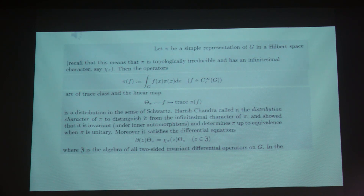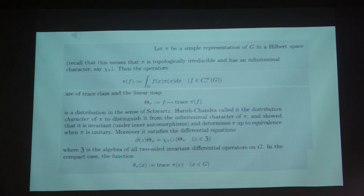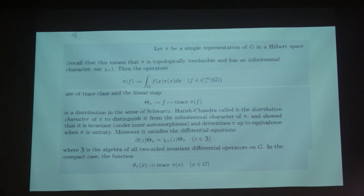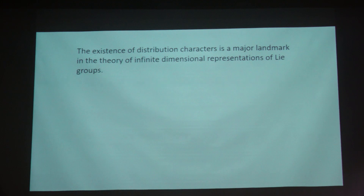This linear map sending f to trace of π(f) is a distribution in the sense of Schwartz. Harish Chandra called it the distribution character of π, to distinguish it from the infinitesimal character. He showed that it is invariant under inner automorphisms, that it determines π up to equivalence when π is unitary, and that it satisfies differential equations: taking an element of the center of the enveloping algebra and differentiating the distribution yields scalar multiplication by the infinitesimal character. The existence of distribution characters is a major landmark in the theory of infinite-dimensional representations of Lie groups.